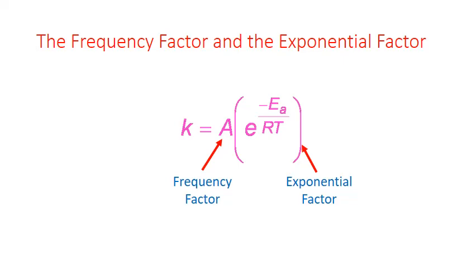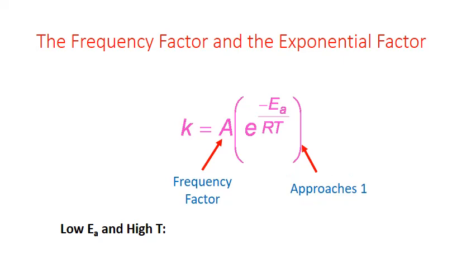The exponential factor, when calculated, is a number between zero and one that depends on both the activation energy and the temperature. A reaction with a low activation energy that occurs at high temperature makes a small negative exponent and the overall exponential factor approaches one. In other words, most of the molecules that approach the activation barrier under these conditions have enough energy to overcome it and proceed to products.